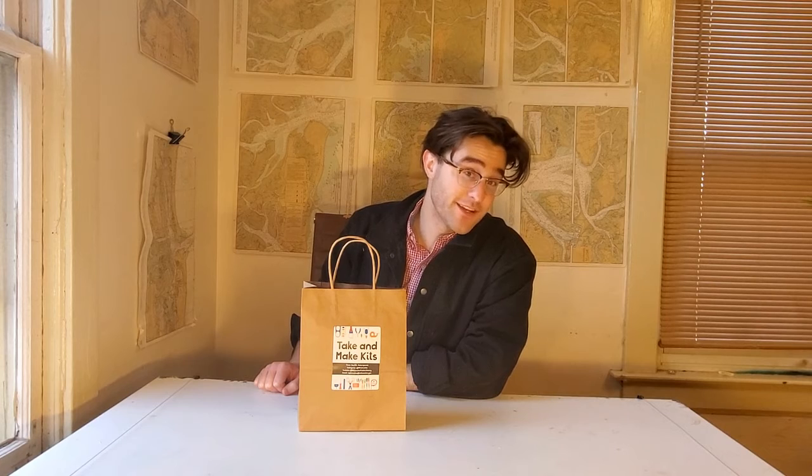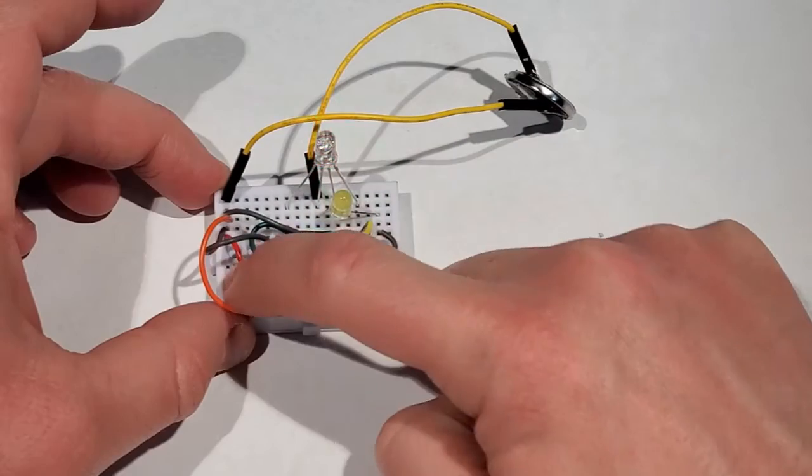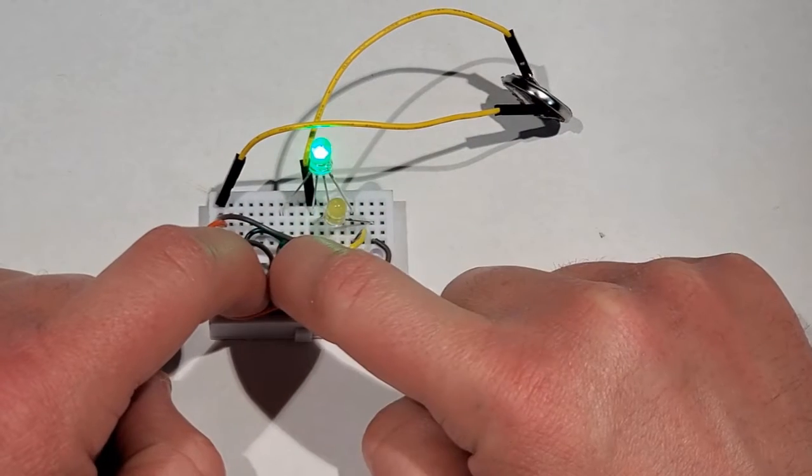Welcome back to the Milwaukee Public Library Makerspace at Home Edition. In this video I'm going to be showing you how to make one of our free take and make projects available at all branches while supplies last. Very proudly I'm going to show you how to make the three light circuit project. So grab your materials and let's get started.